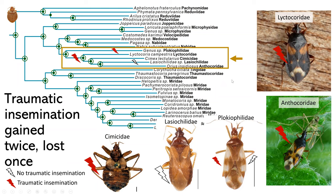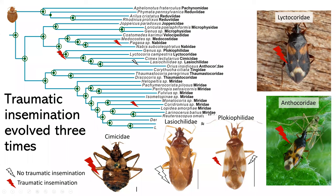Looking across all of Cimicomorpha, traumatic insemination may have evolved three times — once within Nabidae, Cimicoidea, and Miridae — or it could have evolved four times. We got a somewhat clearer picture with our data set, but more data is needed to really get a full idea of how this fascinating behavior evolved.